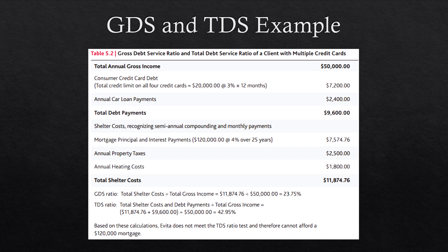Looking at calculation examples: for the GDS ratio, you take the mortgage payment of $7,574, add property taxes and heating costs, then divide by total annual gross household income — in this case arriving at 23.75%, which is below the 32% threshold and acceptable. For the TDS ratio, you add the minimum required debt payments — including $7,200 in consumer credit card debt and a $2,400 annual car loan payment — to the shelter costs, which in this case pushes the TDS ratio above 40%, raising a red flag that could result in the mortgage being denied.